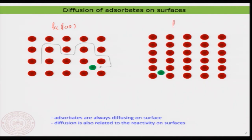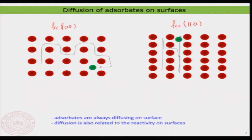Now I take another surface — an FCC 110 surface. You see the surface structure is slightly different and if I look at the time lapse of this surface, the atom is again moving on the surface. But you can see the atom is all the time moving just along a given track path. In the case of FCC 100, the atom was actually moving over a larger range of distance and at the same time moving in both two dimensions.